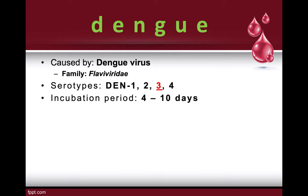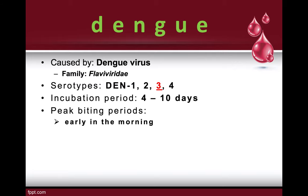The incubation period for dengue is around four to ten days before the first symptoms appear. The peak biting periods of Aedes species — both aegypti and albopictus — are early in the morning and in the evening before dusk, so be more cautious during those times.